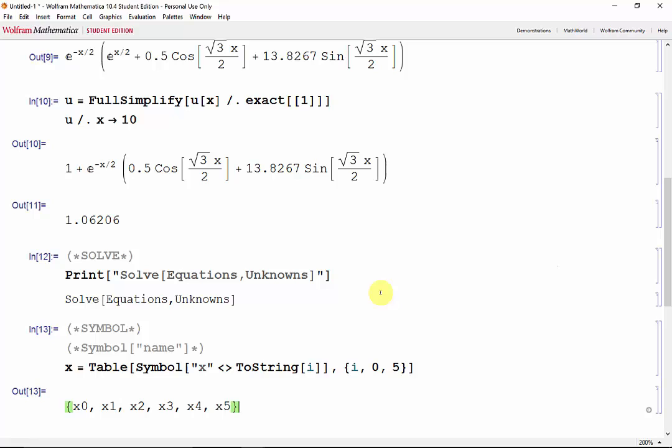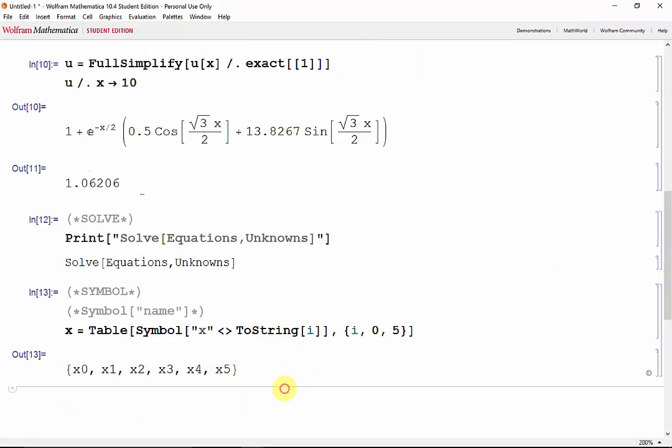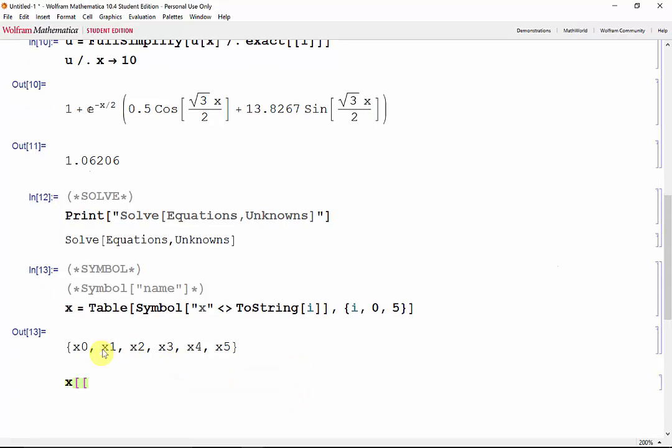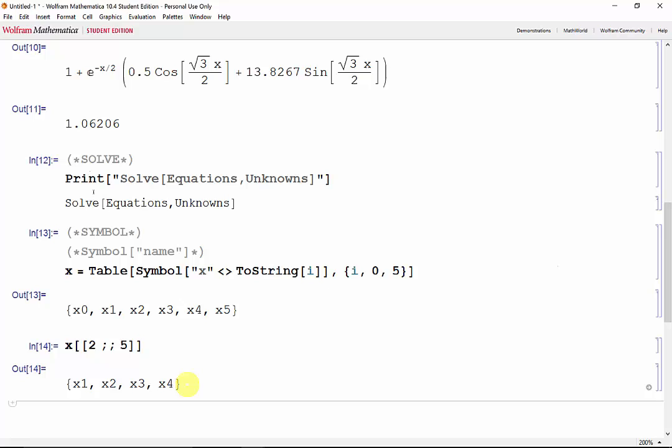Now let's say we wanted to grab x from 1 to 4. We could use square brackets with semicolons as follows. So x1 to x4 are the elements 2 to 5. So we'll start at x of 2 and then double semicolon all the way to x of 5. Shift-Enter. And we get our desired table.